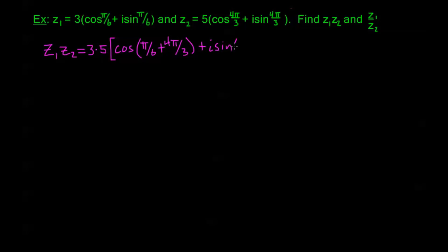Simplifying this out, Z₁Z₂ has a modulus of 15. π/6 plus 4π/3—notice this 4π/3 is the same as 8π/6, so I have a total of 9π/6, which is the same as 3π/2. Plus i sine, and our calculations are cut in half—I only have to calculate this angle once because sine has the same argument, so this is i sin(3π/2). So this is my product Z₁Z₂.